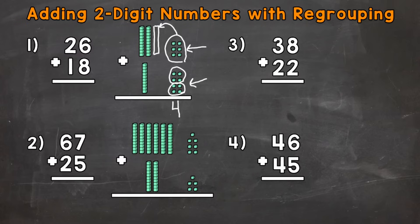Now we count how many tens we have. So we have 1 group of 10, 2, 3, and 4. So 4 tens. So our answer is 44.